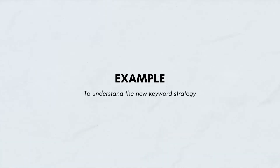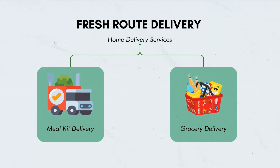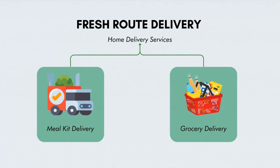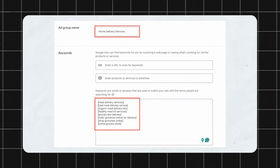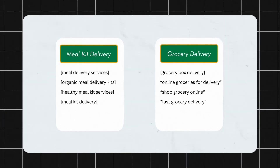To understand this better, let me give you an example. Let's assume we want to promote a home delivery business where one service is to deliver meal kits at home and the other is to simply deliver groceries. You might think that both are food delivery services and therefore put them together in the same ad group, or create exact, phrase, and broad match variations for those. But it's much better to actually create a separate ad group for both.